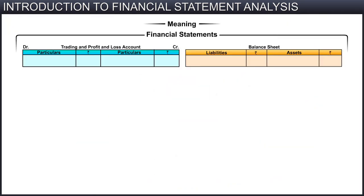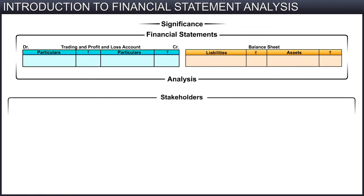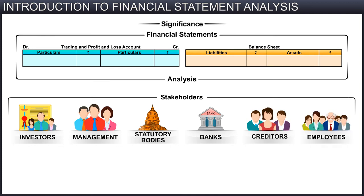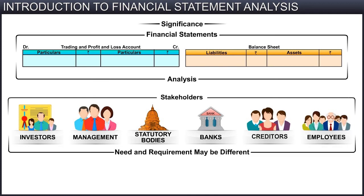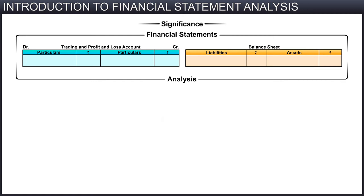Having learnt the meaning of financial statement analysis, we will now learn its significance. There are various categories of stakeholders in a business, like shareholders, investors, management, statutory bodies, banks, creditors, employees, and so forth. The need and requirement of one category of stakeholders may be different from another. As such, the nature of analysis may differ based on the purpose and interest of the analyst. We will now look at the significance of analysis to each of these stakeholders, starting with the finance manager.